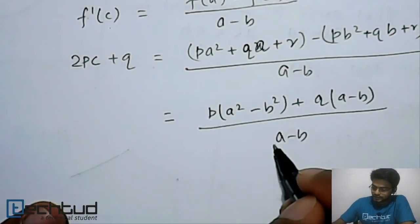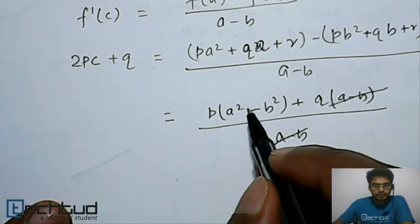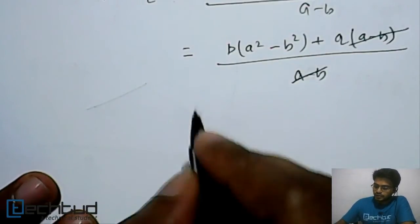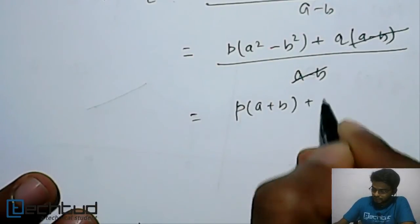Now we can cancel this (a - b) here and from here, because a² - b² will be (a - b)(a + b), right. So it will be p(a + b) + q.